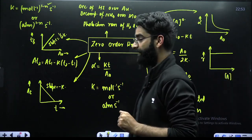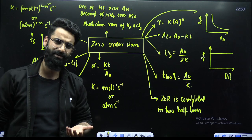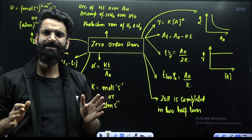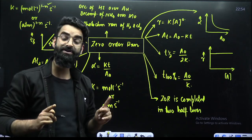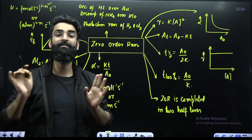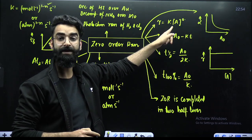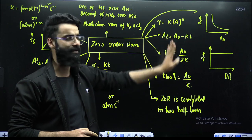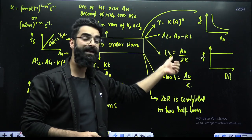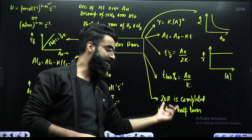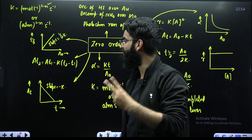For zero-order reactions, the rate is independent of the concentration of the reactant. Increasing or decreasing the concentration of reactant has no effect on the rate. The rate law is: rate equals rate constant times concentration of reactant raised to power zero — so it equals simply the rate constant K. The integrated rate equation is: A_T equals A_0 minus KT. Half-life is A_0 divided by 2K, and completion time is A_0 divided by K. A zero-order reaction is completed in two half-lives.